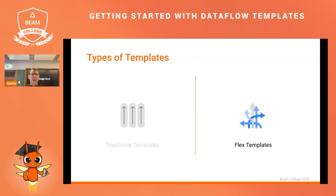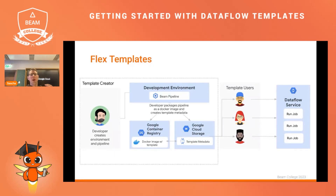The second type of template is the flex template. The development flow here is a little bit different. A person develops a pipeline, tests it, and is satisfied with the results. At the end, a template metadata file is created on Cloud Storage and a Docker image of the pipeline is stored in a container registry. Users are then able to refer to the template file and submit it to execute the actual Beam pipeline.